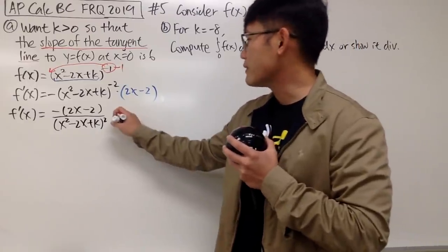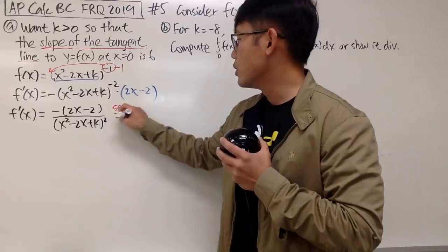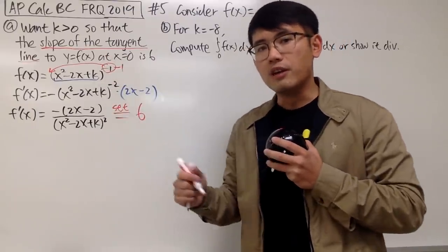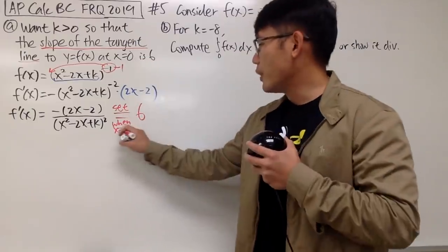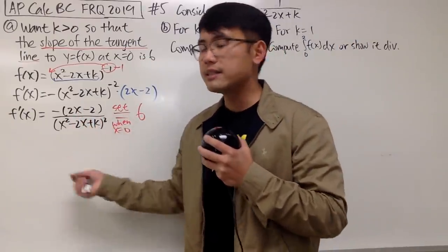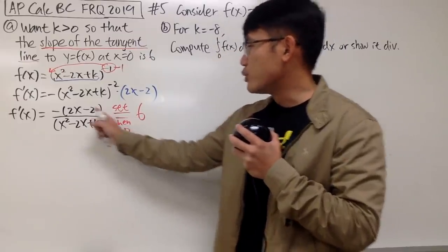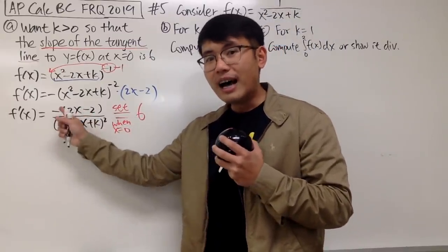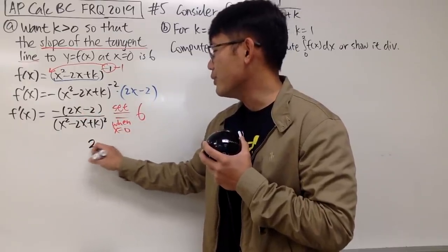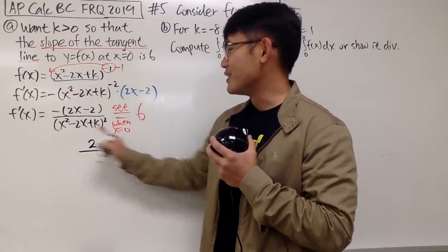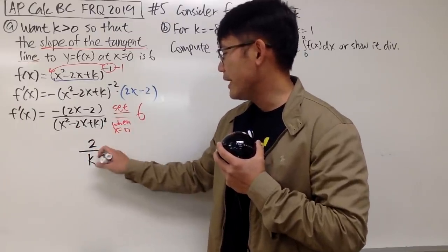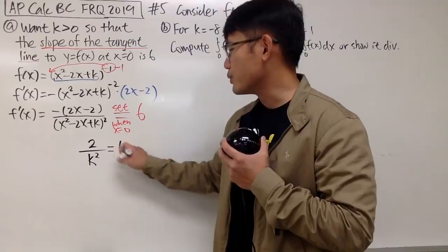I'll rewrite this a little bit. We have the derivative: negative (2x minus 2) on the top, all over (x squared minus 2x plus k) squared — that's the expression for the derivative. Now we just have to set this equal to 6, because that's the slope of the tangent line. When x equals 0, we put 0 into all the x's: the top becomes negative times negative, which is just 2, and the denominator is just k squared. So we have 2 over k squared equals 6.